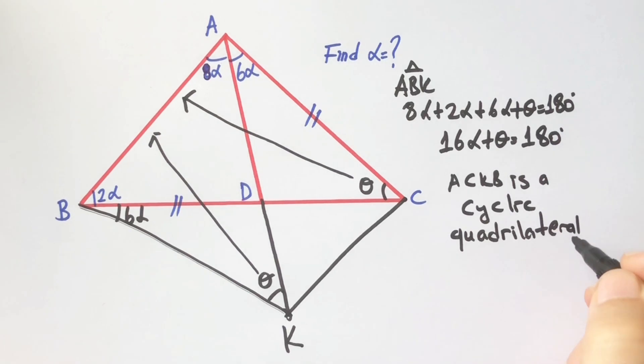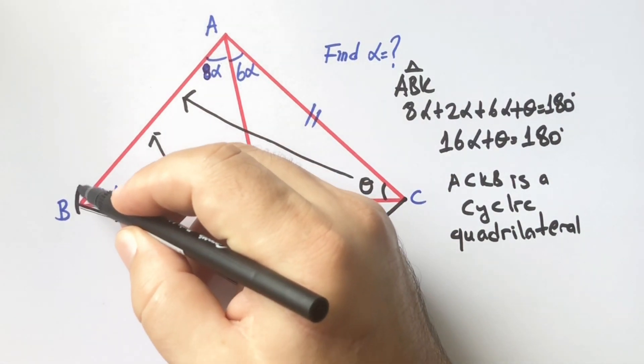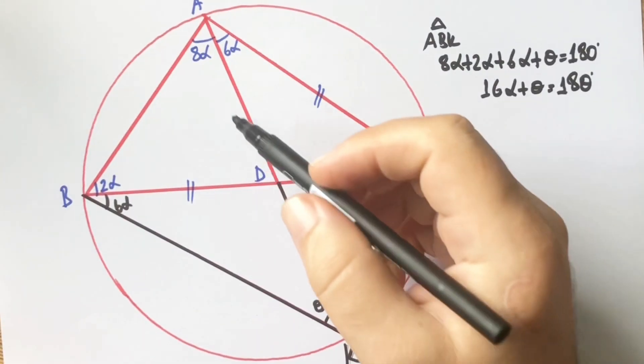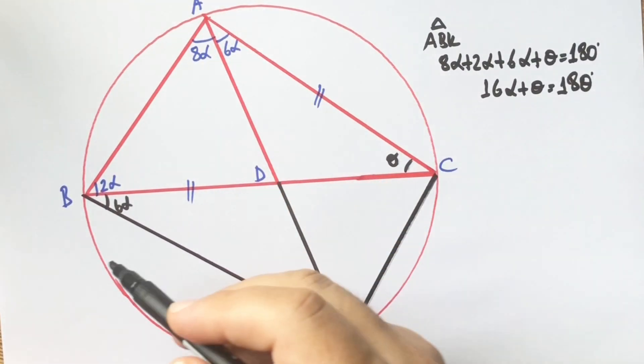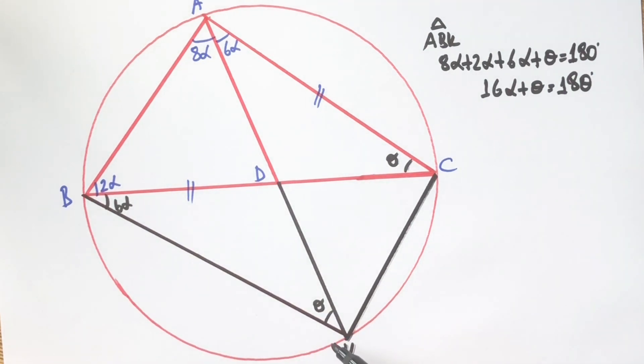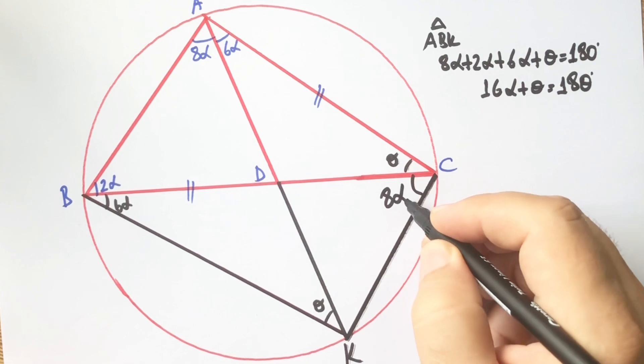Therefore, if we draw the circumcircle of this quadrilateral like this, if here is 8α, this angle must be 8α, right?